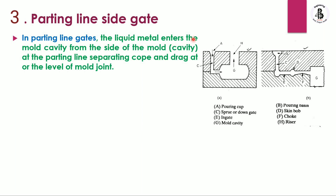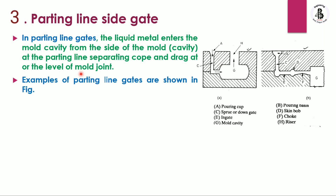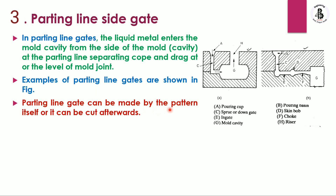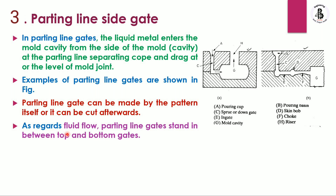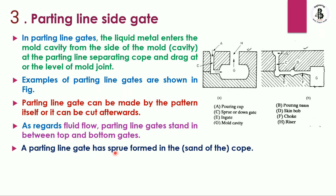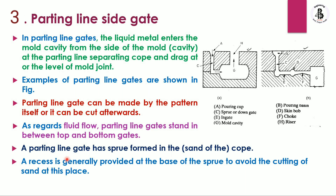In parting line gates, the liquid metal enters the mold cavity from the side of the cavity at the parting line separating the cope and drag — at the level of the mold joint between cope and drag. Parting line gates can be made by the pattern itself or cut afterwards. Regarding fluid flow, the parting line gate stands between the top and bottom gate. A parting line gate has a sprue formed in the cope, and a recess is generally provided at the sprue base to avoid cutting of the sand.